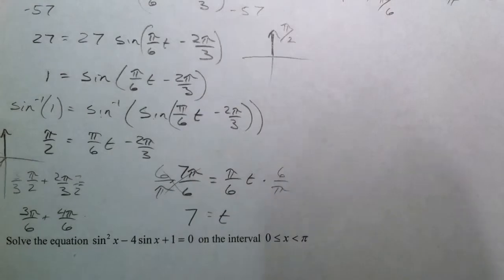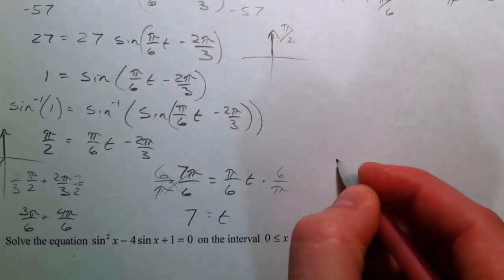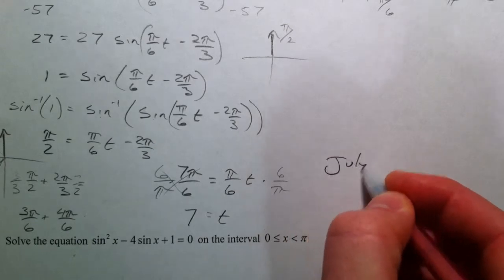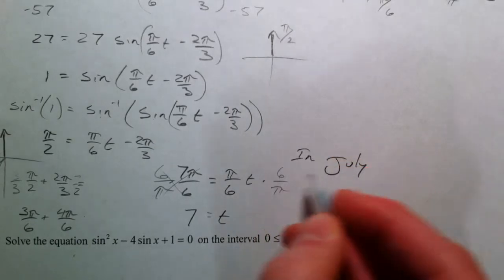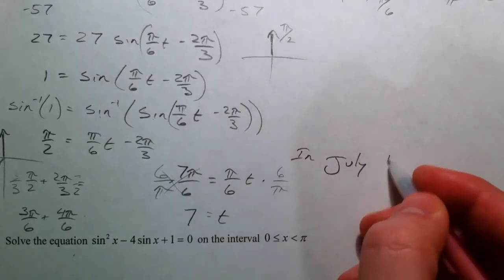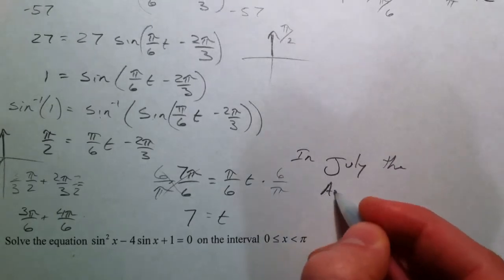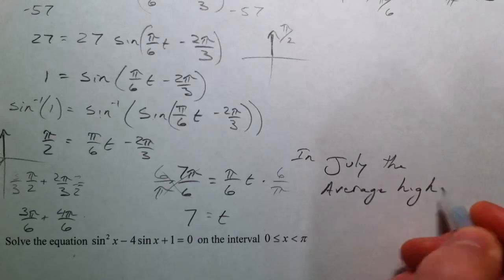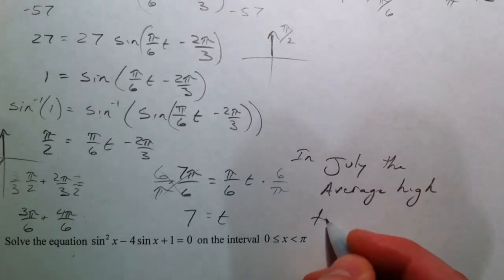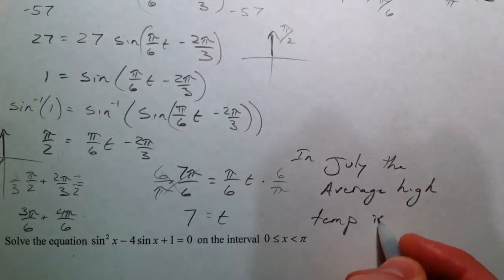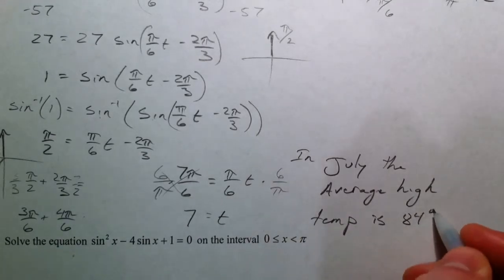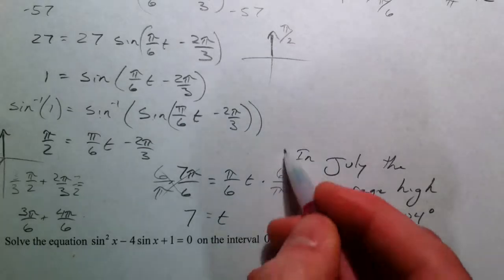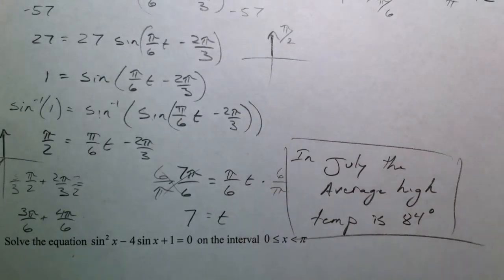In what month is the average high temperature 84 degrees? The average high temperature is 84 degrees in July — month 7.